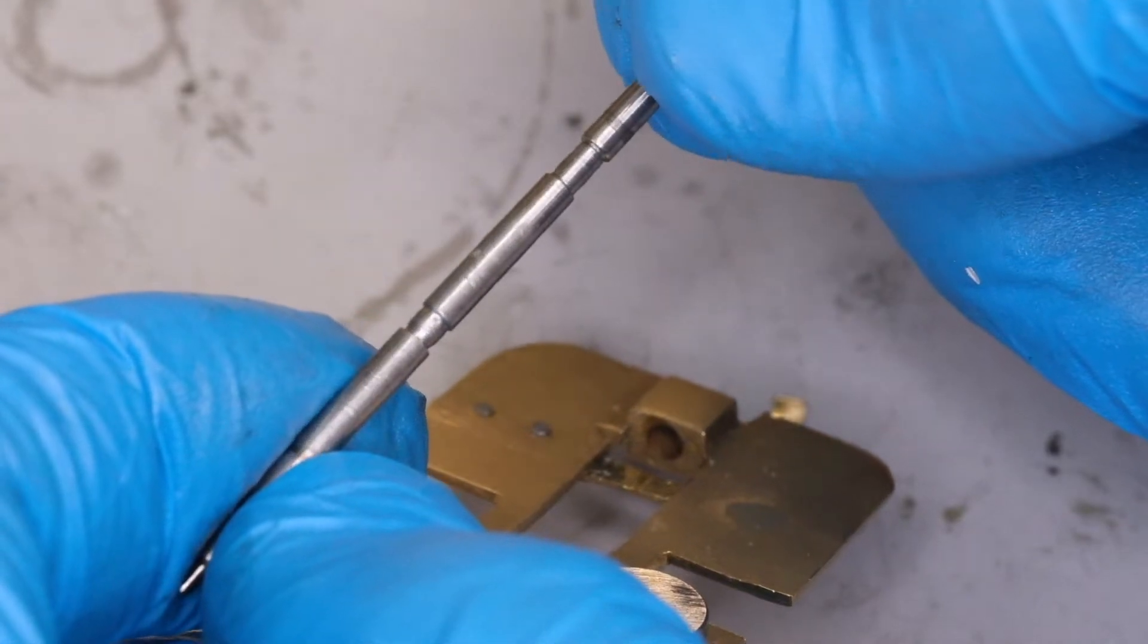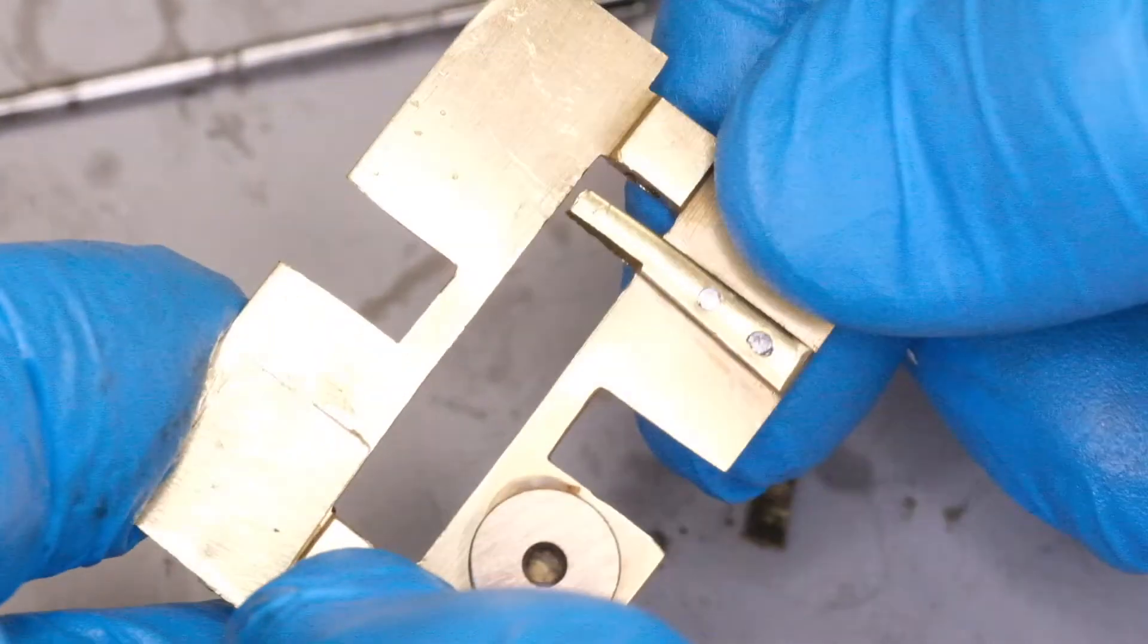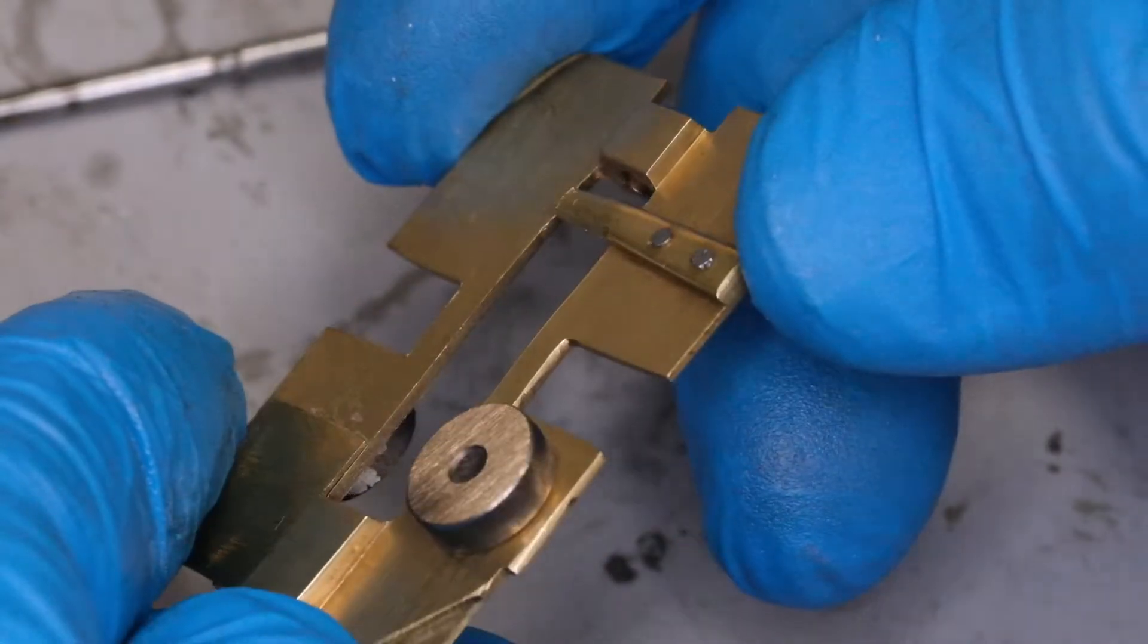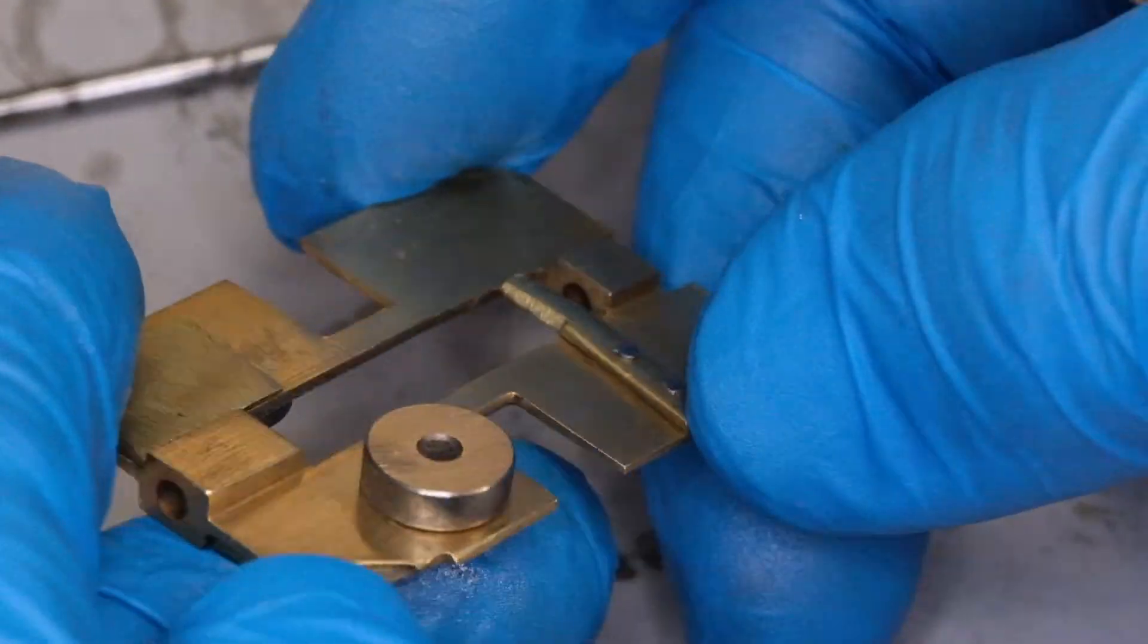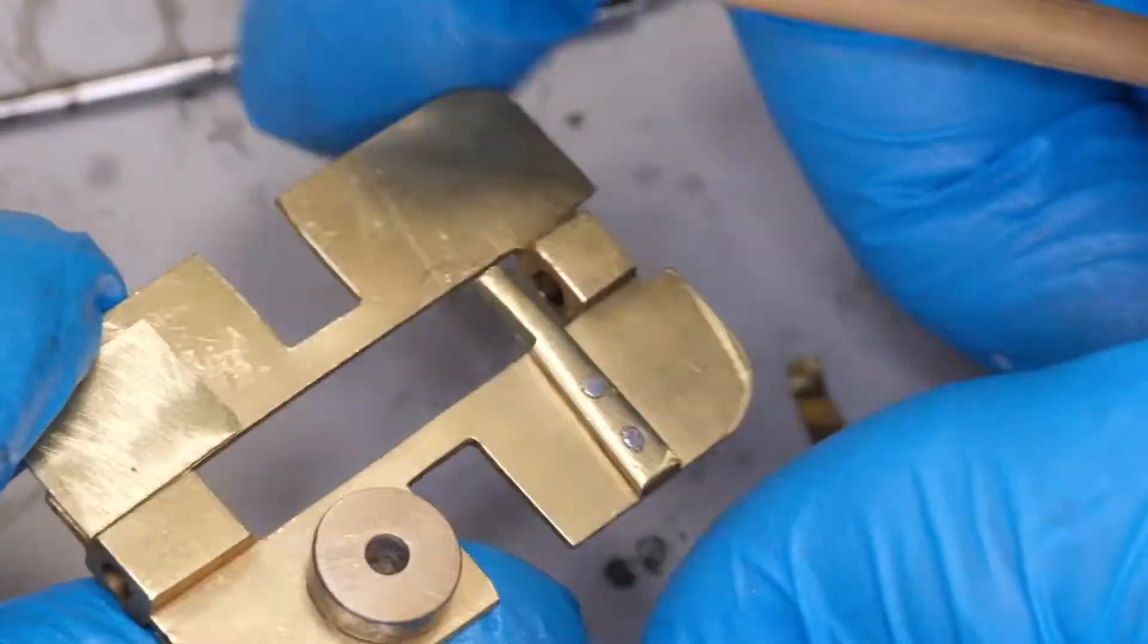So the first thing we're going to do is get those added-on pieces off. They're glued on, so I pop the whole thing in acetone and leave that overnight.